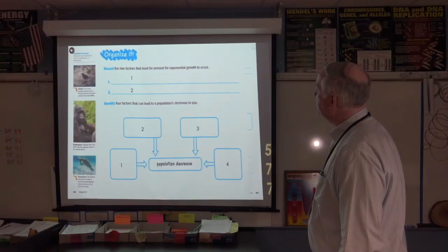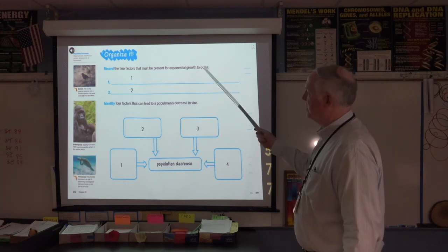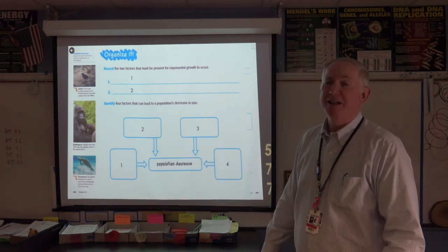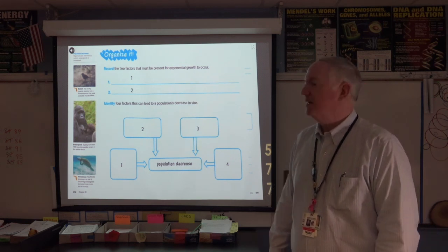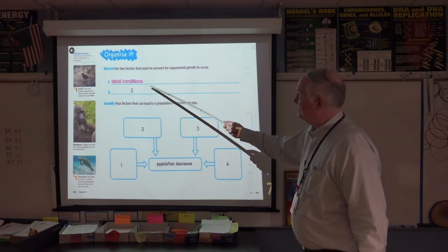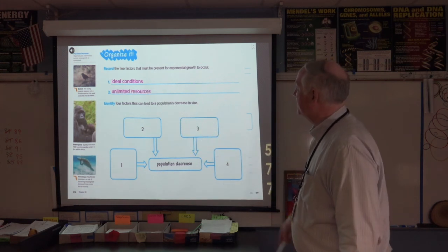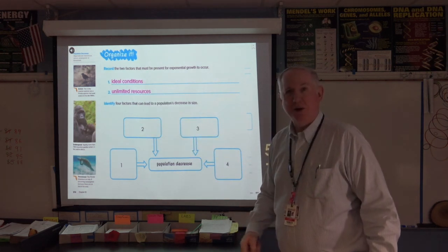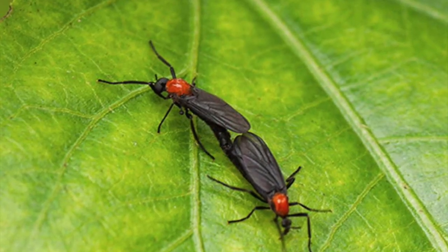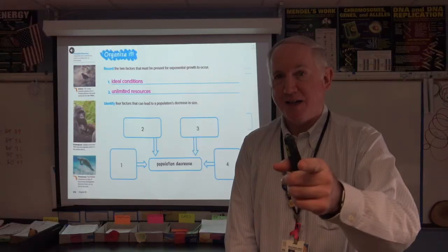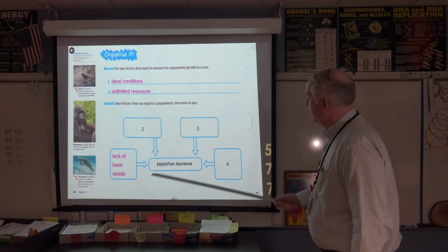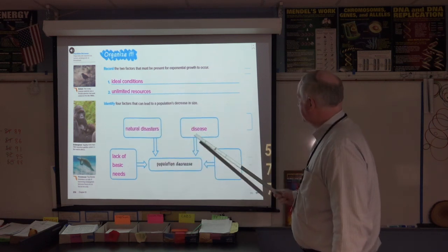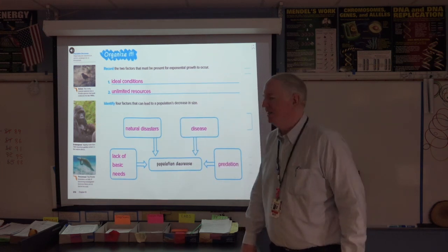Record the two factors that must be present for exponential growth to occur. If you want your little colony of bacteria to grow like crazy, they're going to need space, food, and water — basically ideal conditions. And unlimited resources. If you give a species these two things, they can grow exponentially. Do you know what species we've seen grow exponentially? Us — human beings. Population decreases due to lack of basic needs, natural disasters, disease, and predation. Remember, those are the same four items.